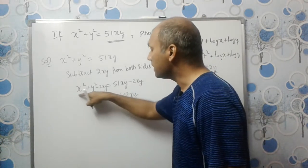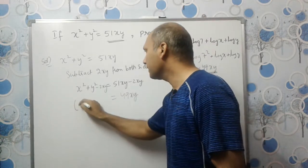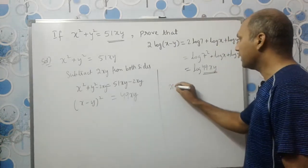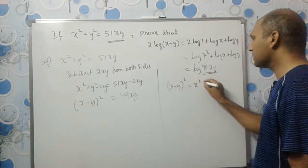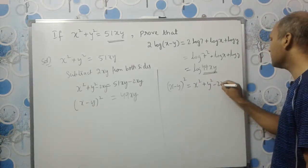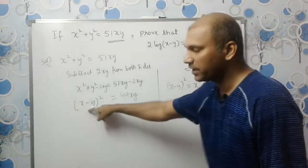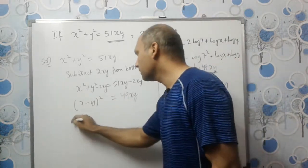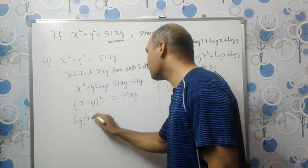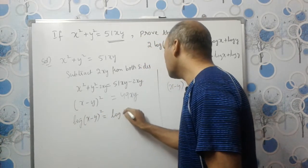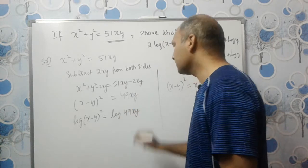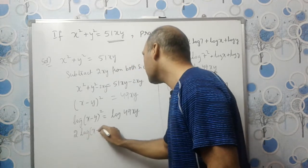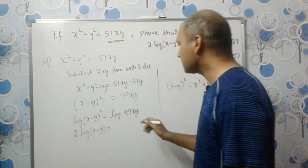The left side x² + y² - 2xy is exactly the expansion of (x - y)², so we write it as (x - y)² = 49xy. Now apply log on both sides: log(x - y)² = log(49xy).